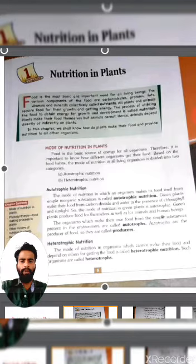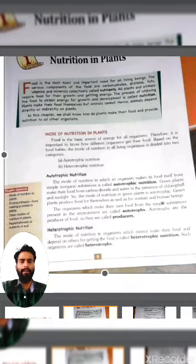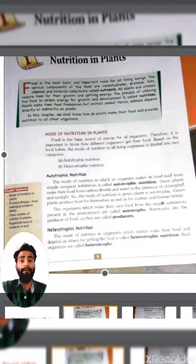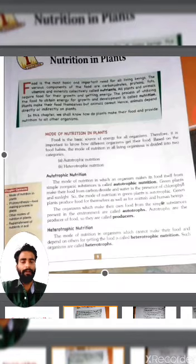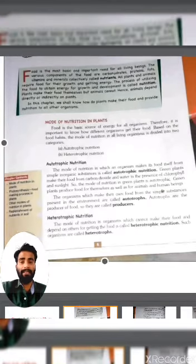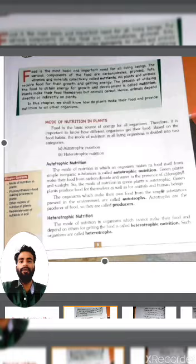We all know that food is the basic and important need for living beings. The various components of food — like carbohydrates, proteins, fats, vitamins, and minerals — are collectively called nutrients. All plants and animals require food for their growth and energy. The process of utilizing food to obtain energy for growth and development is called nutrition.